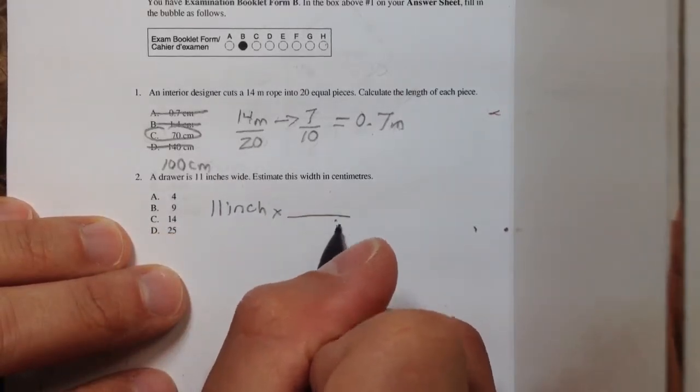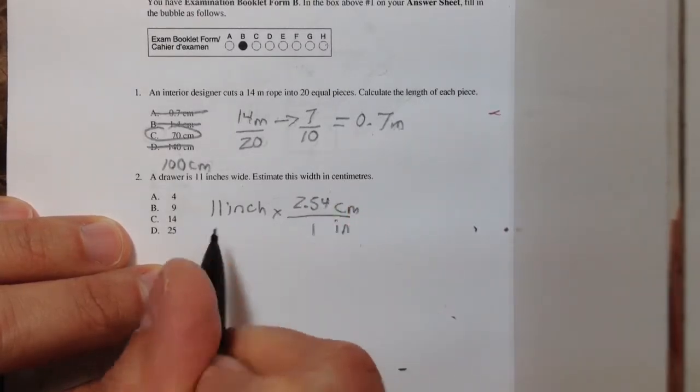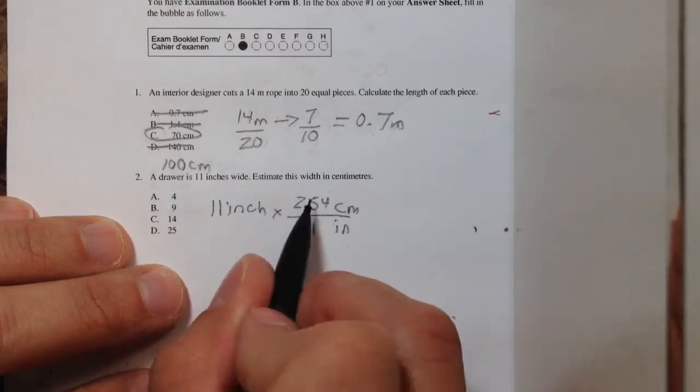And we know that for every inch, that's equal to 2.54 centimeters. You can't do 2.54 on your head times 11, so don't even bother.